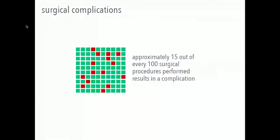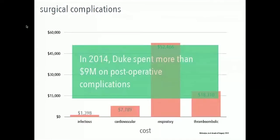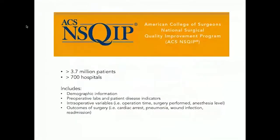Switching gears, we're going to look at predicting surgical complications. This is a switch from looking solely at electronic health record data in the Duke hospital system to looking at large national databases in combination with our local data. About 15 out of every 100 surgical procedures results in a complication, and in 2014, Duke spent about $9 million on post-operative complications.